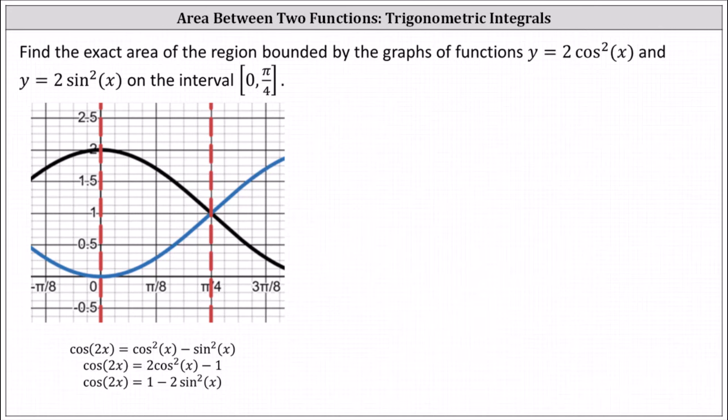Find the exact area of the region bounded by the graphs of the functions y = 2cos²(x) and y = 2sin²(x) on the interval [0, π/4].